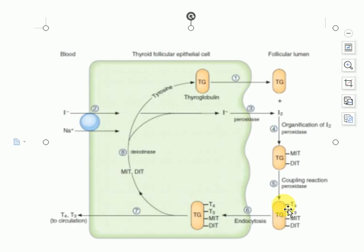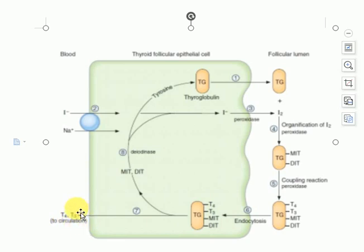When the thyroid gland cells are stimulated, the iodinated thyroglobulin is taken back into the follicular cells through endocytosis. The lysosomal enzymes then digest the thyroglobulin, releasing T4 and T3 into the circulation. T3 is the more reactive form, and in the peripheral tissues T4 is converted to T3 by the 5'-deiodinase enzyme.